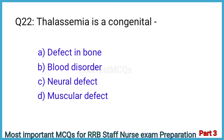Question No. 22. Thalassemia is a congenital — the right answer is Option B: Blood disorder.